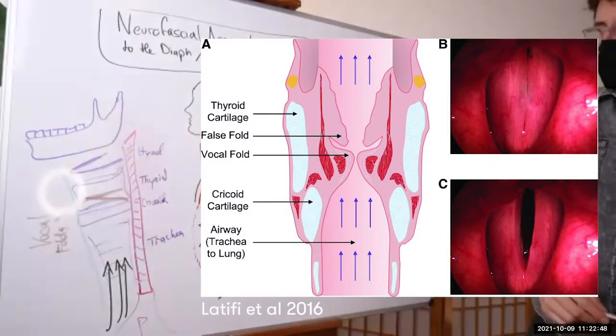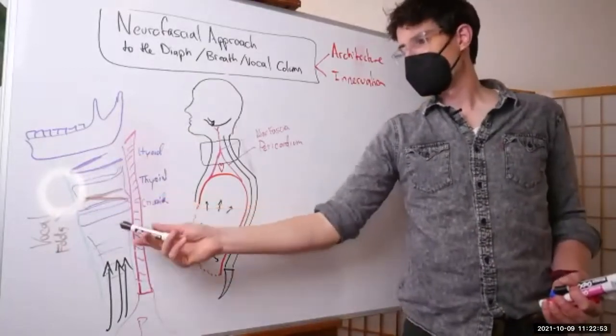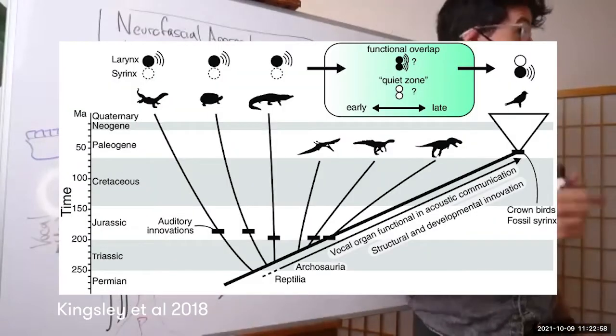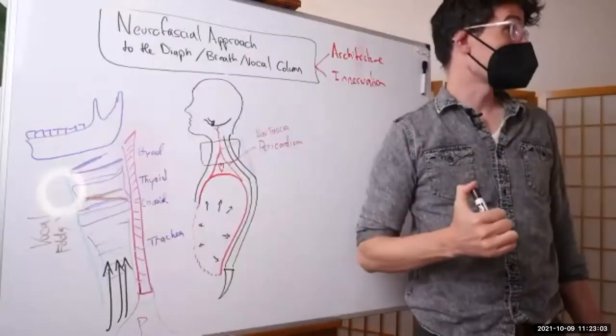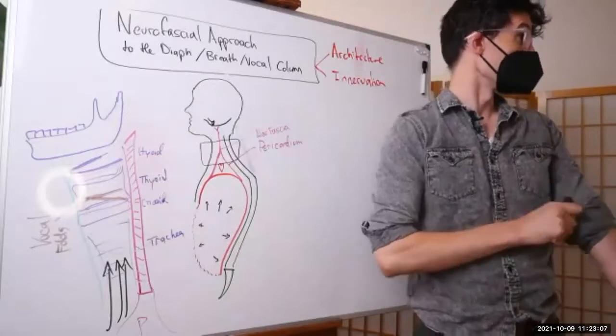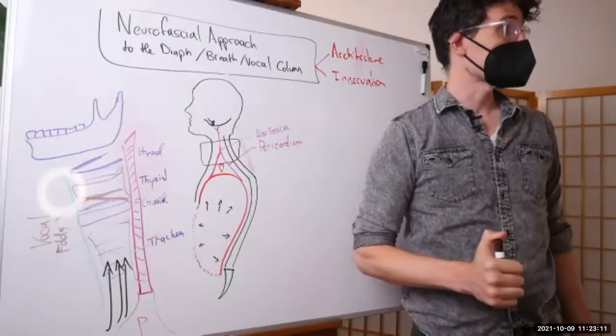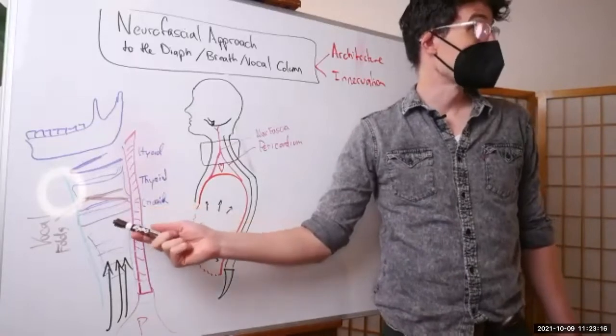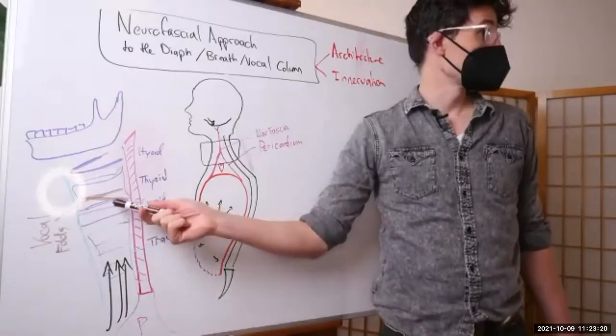Over the course of evolutionary time, the vocal folds have actually re-evolved in numerous species. Mammals and our vocal cords is not the first and only time that creatures have learned how to squeeze their air column and produce vibration.